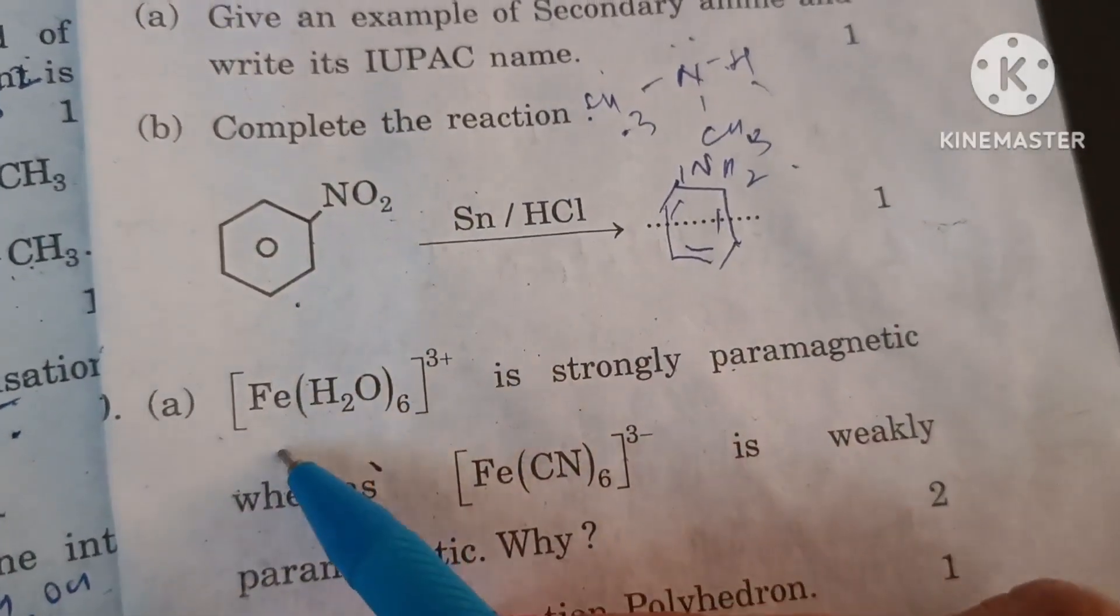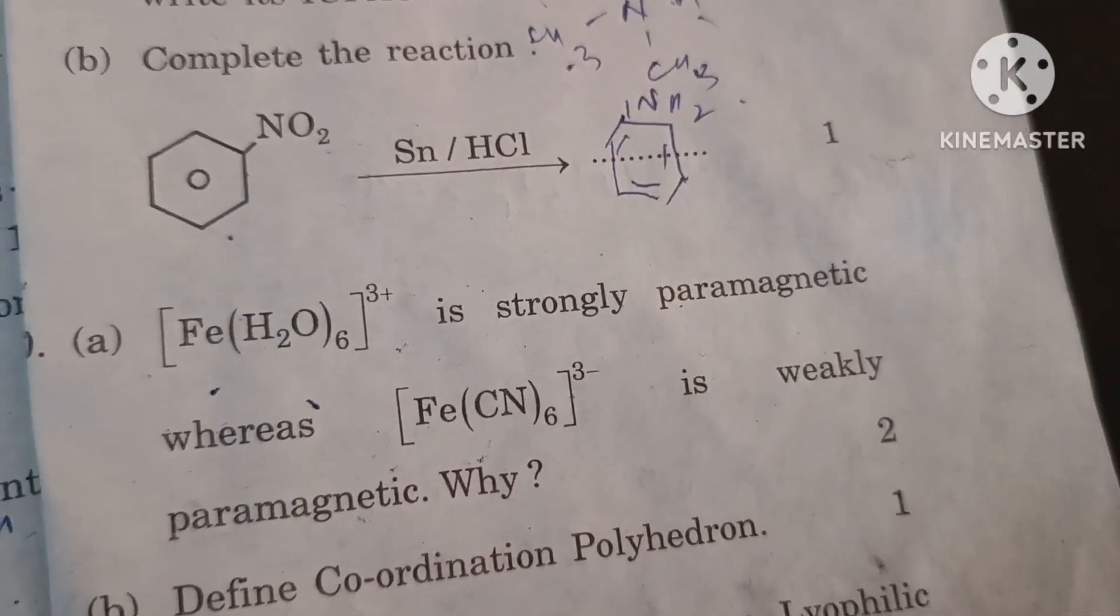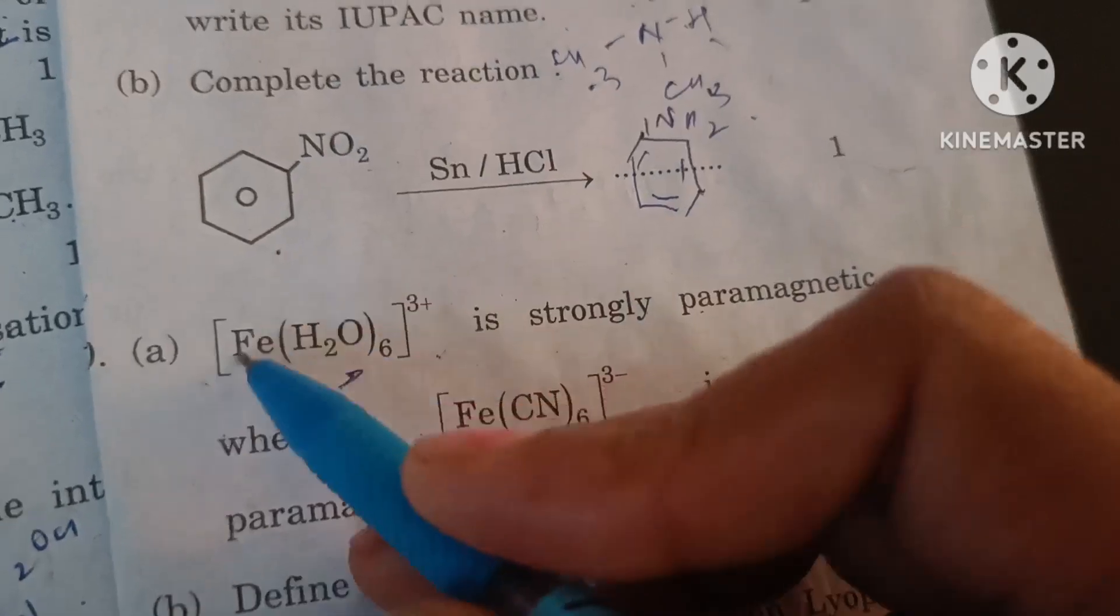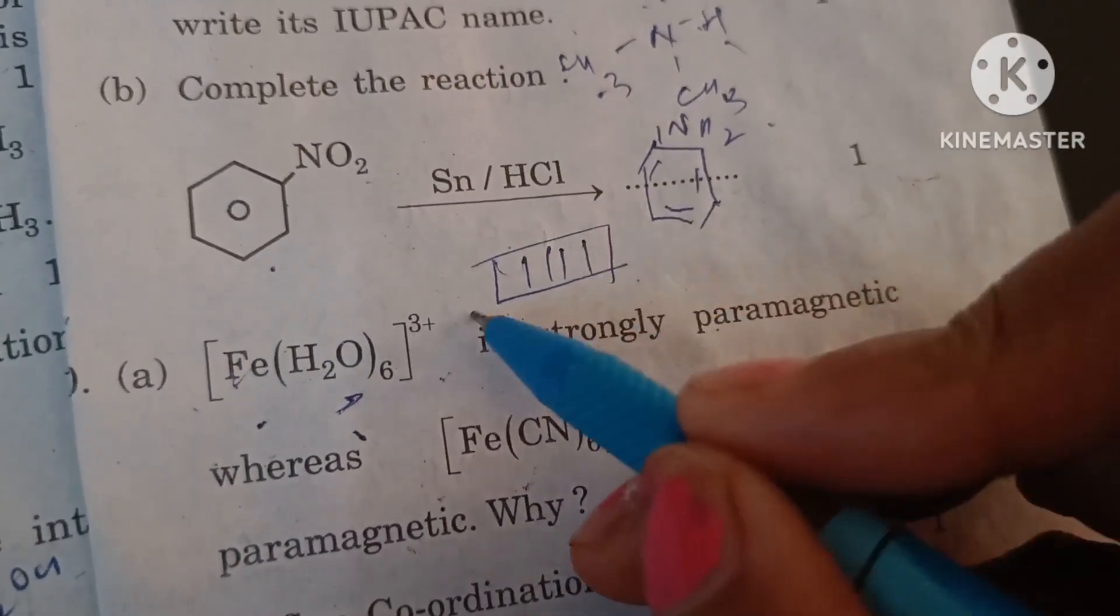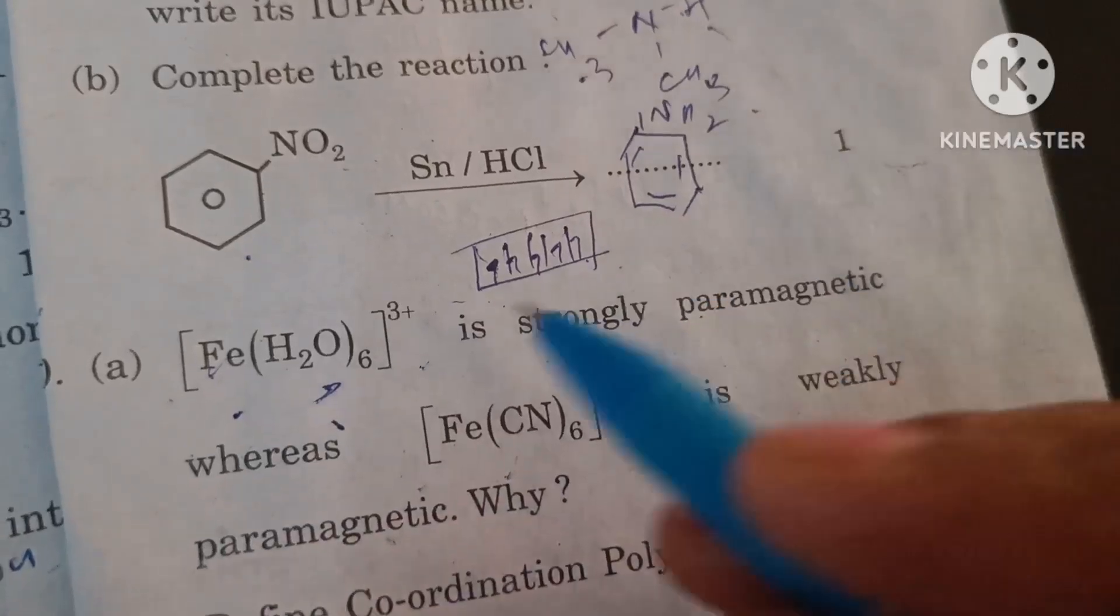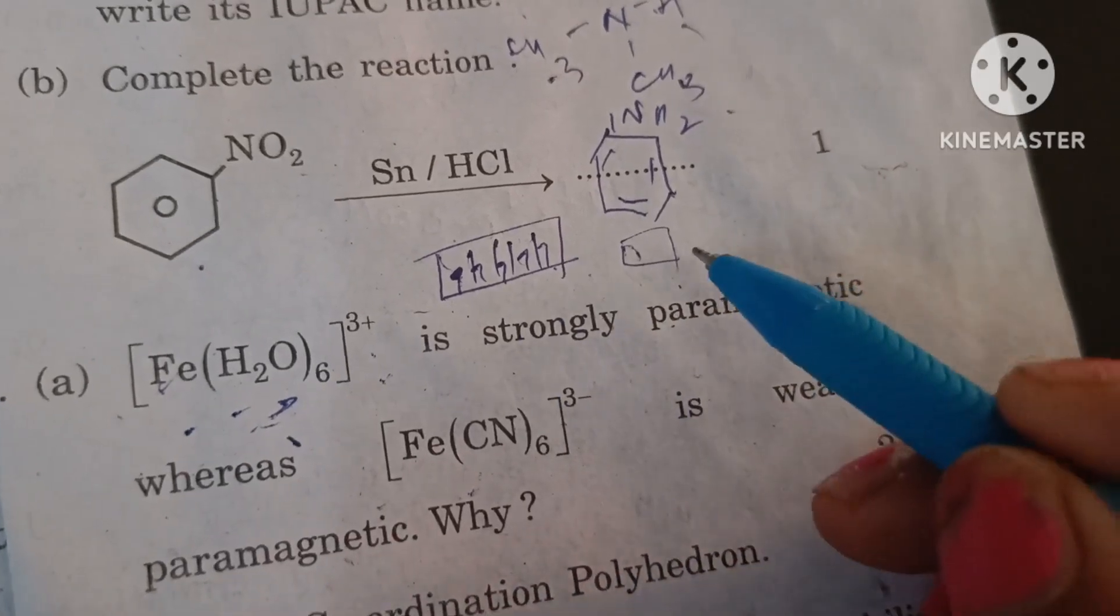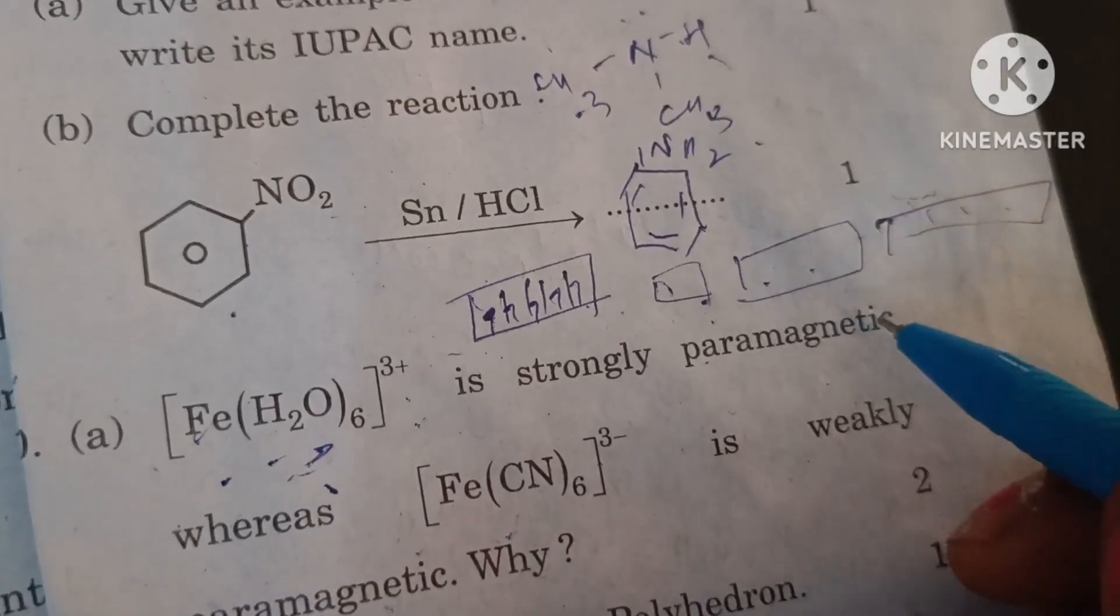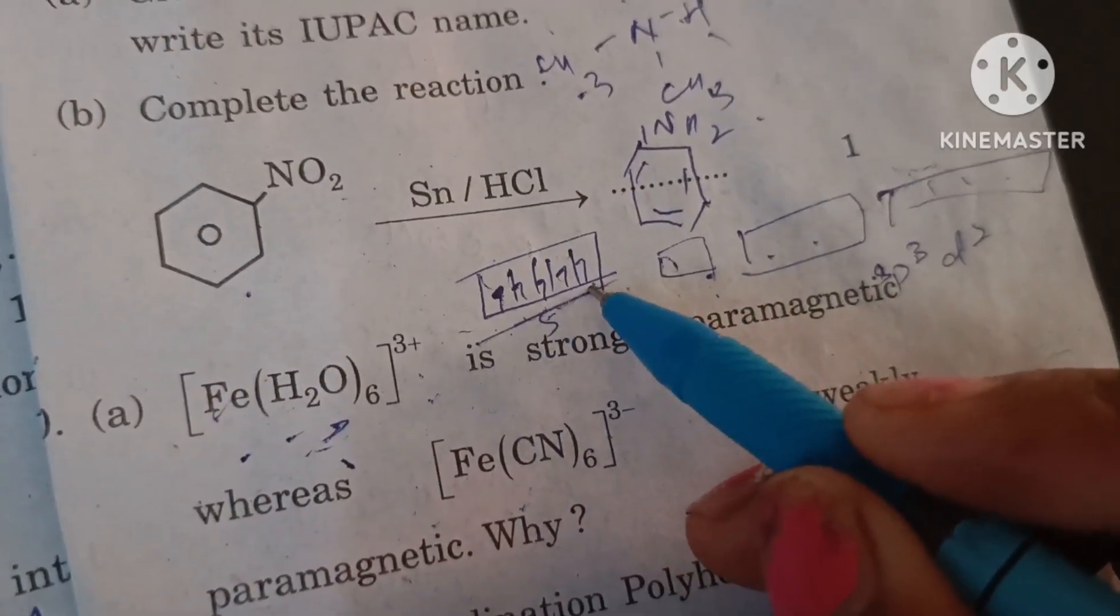Hexaaqua iron(III) is strongly paramagnetic whereas [Fe(CN)₆]³⁻ is weakly paramagnetic. Why? This is because water is a weak field ligand. In +3 oxidation state iron has five electrons in its d orbitals and because it cannot pair them up, outer orbitals sp³d² are engaged in sp³d² hybridization and so it is strongly paramagnetic due to presence of five unpaired electrons.